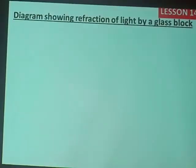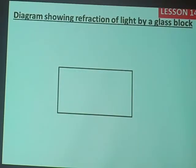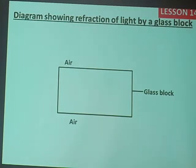We want to illustrate a diagram showing reflection of light by a glass block. I have picked one example of transparent media that can bend a light ray — a glass block. Around this glass block there is air. Now, one is less dense and the other is denser. Air is less dense and the glass block is denser.